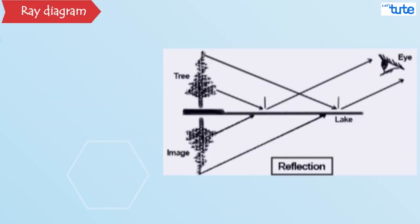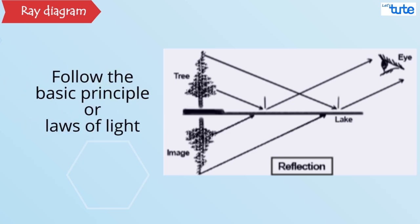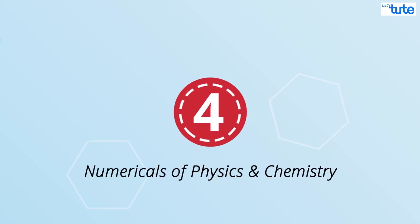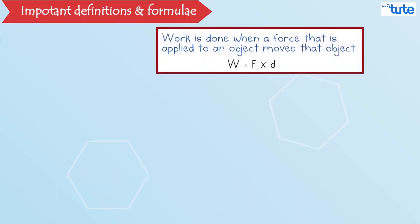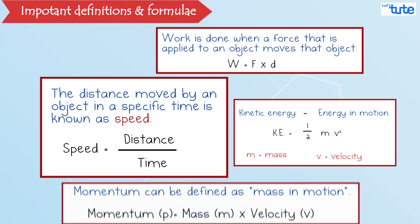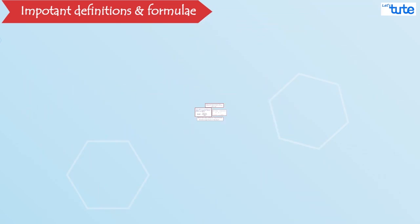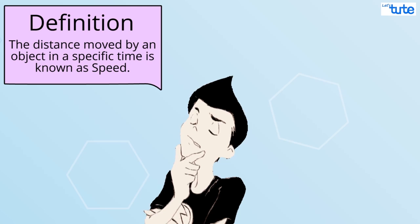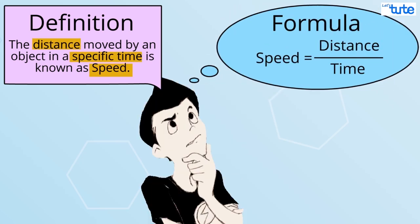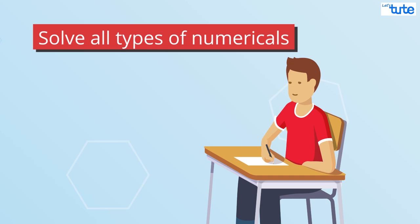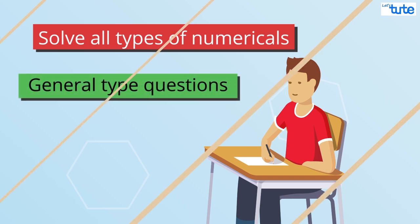Talking about ray diagrams, you just have to follow the basic principle or laws of light. Talking about numericals of physics and chemistry, write those formulas along with their definition in a separate sheet. Relating the two is very important because if you know the definition, you can remember the formula and vice versa. Solve all different types of numericals and in most cases, solve the general types.